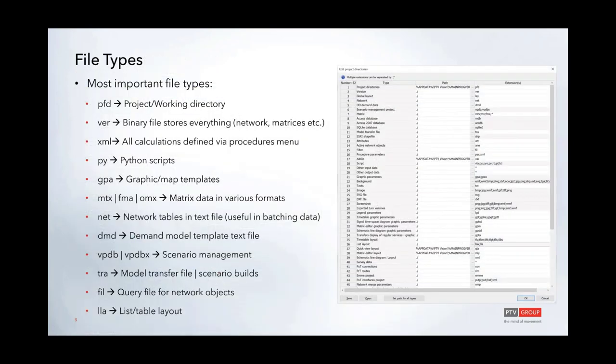There are many file types associated with vZoom, but generally only a few that you'll interact with regularly. The most important is the PFT file, which is a working directory file used to set up and reference a project folder. Once referenced, the project folder is used as a relative reference so any files you specify are looked up directly in that folder — helpful when you have long directory paths or mapped network drives.